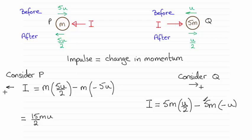So here you've got 5mu plus another 5mu over 2. And that gives me exactly the same result as I had before, which you would expect. So it doesn't matter which one of these particles you work with. That's our magnitude of the impulse, 15mu over 2. A very standard type of question.